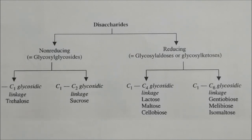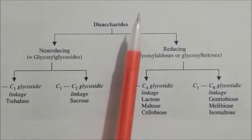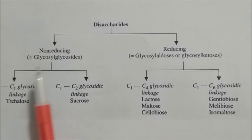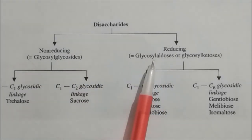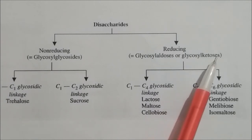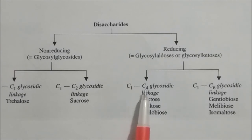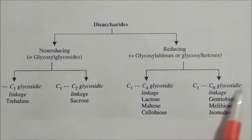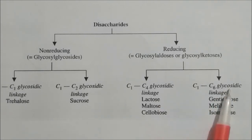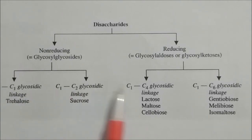A summary chart of glycosidic linkages in disaccharides: non-reducing disaccharides are glycosyl glycosides, reducing ones are glycosyl aldoses or glycosyl ketoses. C1–C2 linkage: trehalose and sucrose. C1–C4 linkage: cellobiose, lactose, and maltose. C1–C6 linkage: gentiobiose, melibiose, and isomaltose. The key linkages to remember are 1,1; 1,2; and 1,4.